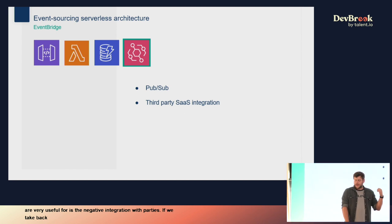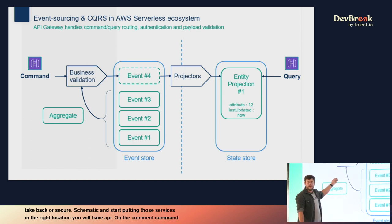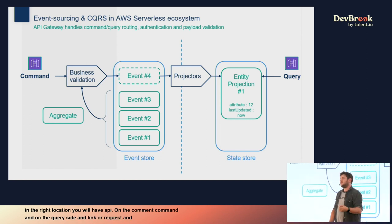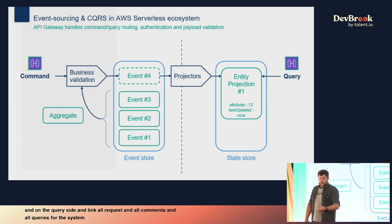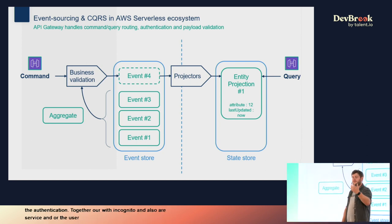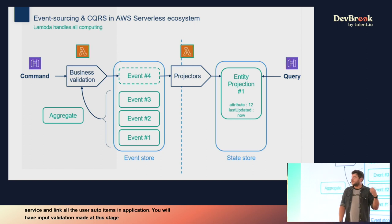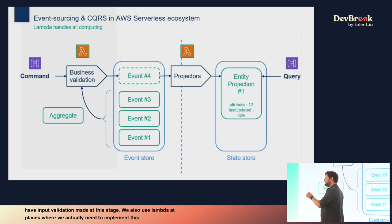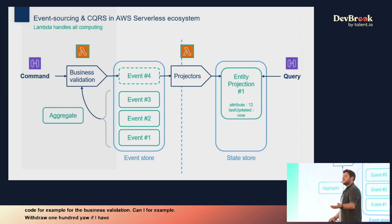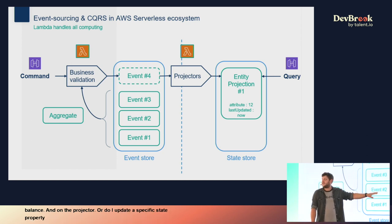Mapping those services onto the CQRS schematic: API Gateway sits on both the command and query sides, handling all requests. It links authentication with Cognito and performs input validation at that stage. Lambda is used wherever we need business-specific code — for example, for business validation: can I withdraw 100 euros if I only have 50 euros on my balance? And on the projectors: how do I update a specific state property based on incoming events?